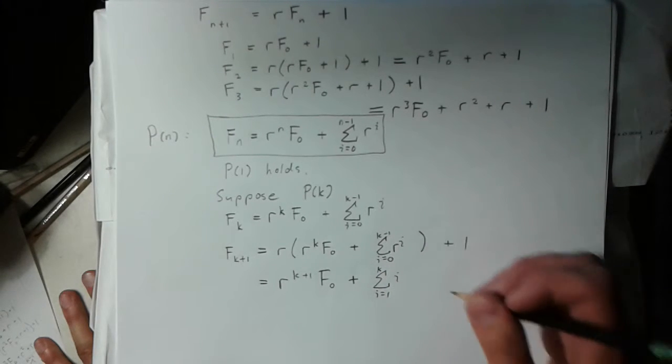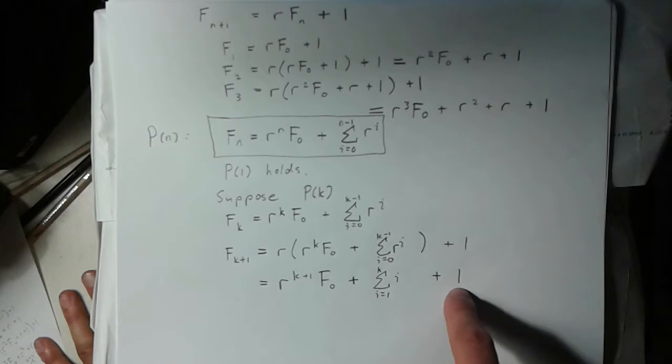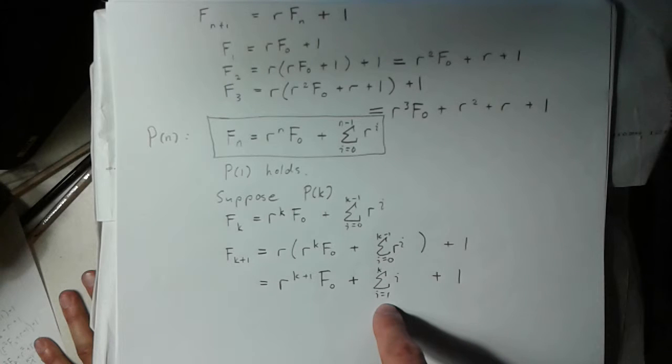And then it just looks like this. And then I've just got my plus 1 over here. So then the thing to notice is that this 1 can be considered the 0th term of this sum.